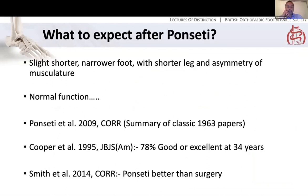What should we expect after Ponsetti? Anatomically the foot will be slightly different — shorter, narrower — the leg itself might be slightly shorter, with some asymmetry of the musculature, but potentially you can have exceptional function. In terms of literature, Ponsetti's two classic papers are from 1963, summarised nicely by Coran in 2009, reporting good outcomes in over 70% of patients. The Cooper paper also reports exceptional outcomes with a control group, showing foot and ankle function was as good as controls — essentially normal. And Smith et al compared Ponsetti treatment to historical surgical interventions for clubfoot and found Ponsetti is superior.